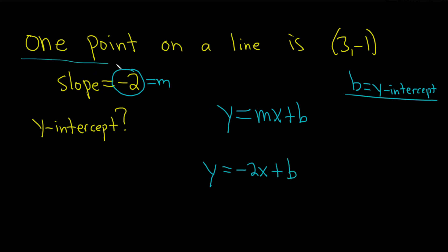Now we're told that one point on the line is (3, -1). So because this is a point on the line, that means if we plug it into the equation of our line, it should be true. So let's do that. Let's plug this into our equation.